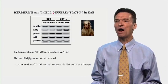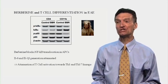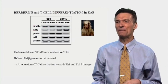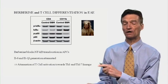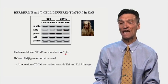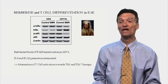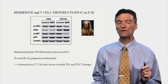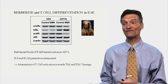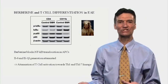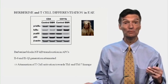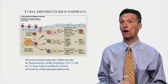What we see is we block activation of IκB kinase in the antigen presenting cells, and then we have fewer inflammatory cytokines. Berberine blocks NF-κB translocation in the dendritic cells, leading to less IL-6, less IL-1β, and we attenuate T cell activation towards the inflammatory Th1/Th17 lineage. These are the types of T cells that mediate heart failure, atherosclerosis, and multiple sclerosis in humans, and experimental multiple sclerosis in this animal model.